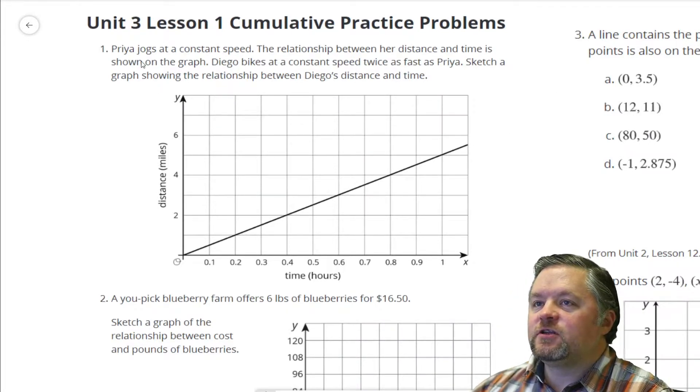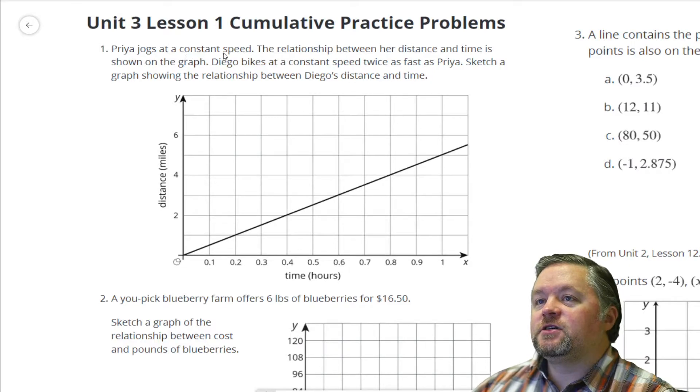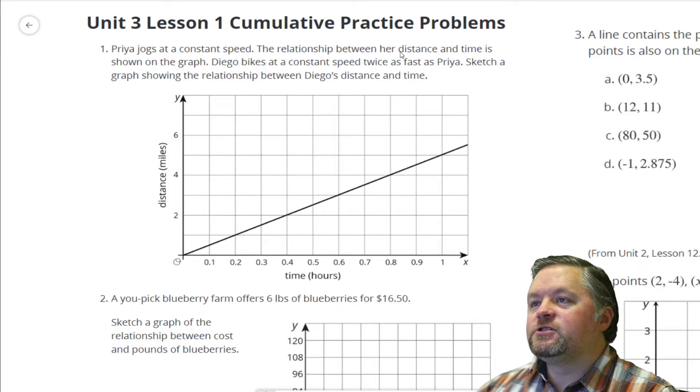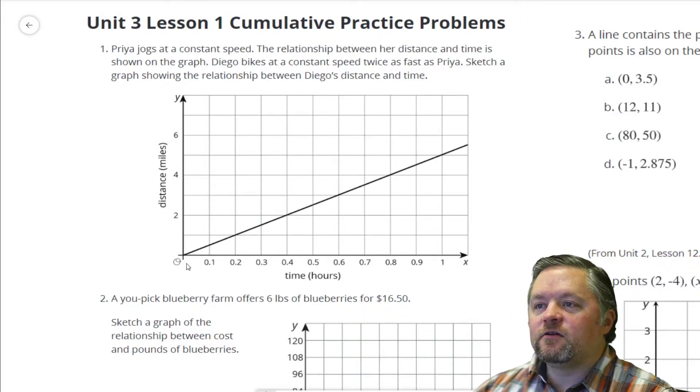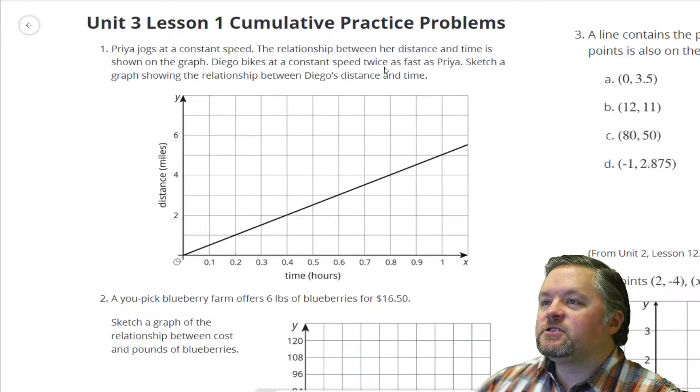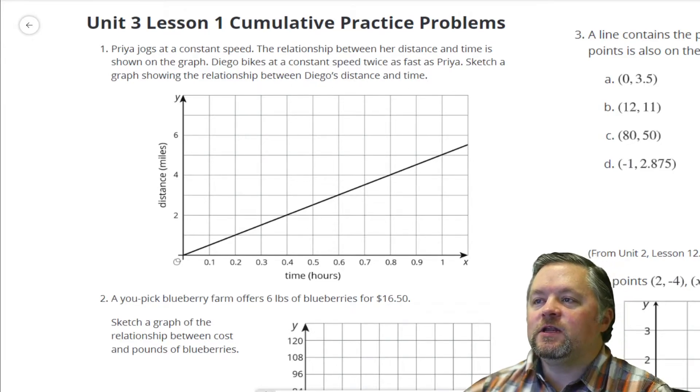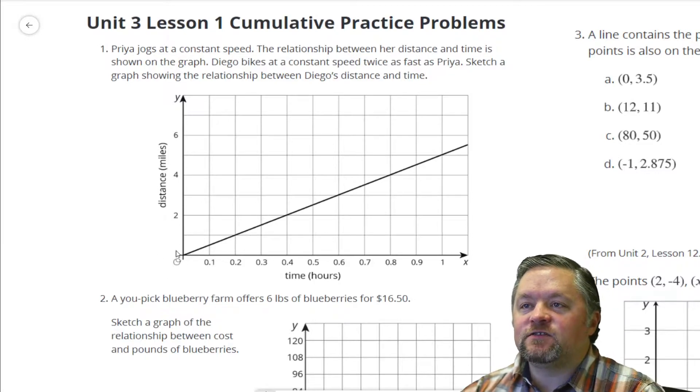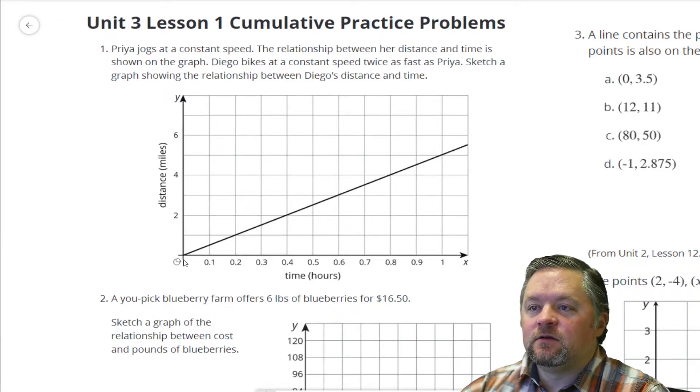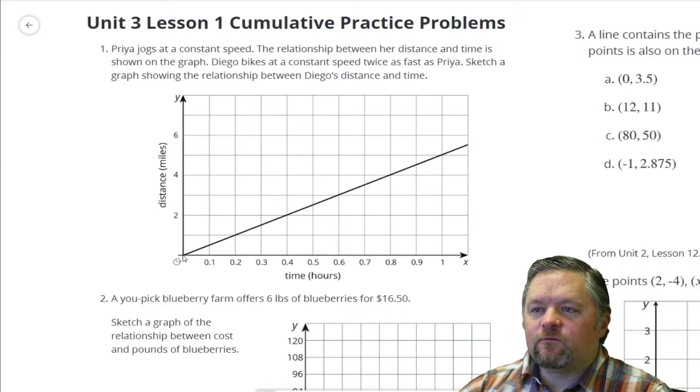Our first question here is, Priya jogs at a constant speed. The relationship between her distance and time is shown on the graph. Diego bikes at a constant speed twice as fast. Sketch a graph showing the relationship between Diego's distance and time. So we know Diego is going twice as fast.